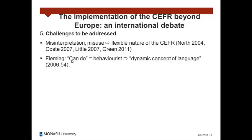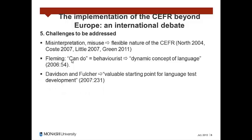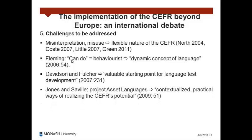Nevertheless, for Fleming, competence frameworks have the potential to focus on the importance of use and purpose, implying a more dynamic rather than static concept of language. Moreover, according to Davidson and Fulcher, who developed in 2007 a specific descriptor for service and counter specification from the generic one proposed in the CFR at level A1, the CFR is a valuable starting point for language test development. Later on, Jones and Saville conducted a project called Asset Language in the UK, which exemplifies the need to develop contextualized practical ways of realizing the CFR potential as a framework for teaching and learning. This pragmatic example of the potential and necessary contextualization of the CFR is one of the ways to address criticism and skepticism about the validity of the framework.